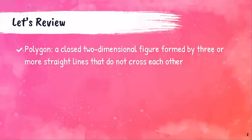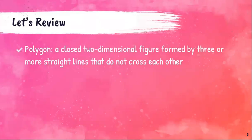Let's start with the word polygon. A polygon is a closed two-dimensional figure formed by three or more straight lines that do not cross each other. It's probably easier to really understand what a polygon is by looking at some figures and deciding if they are polygons or not polygons.